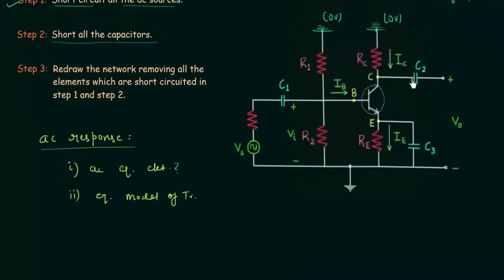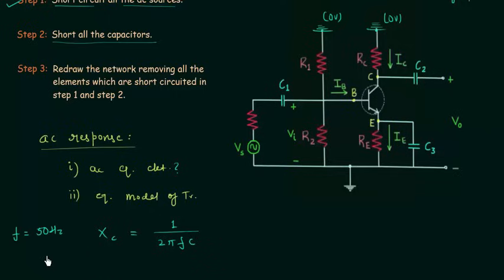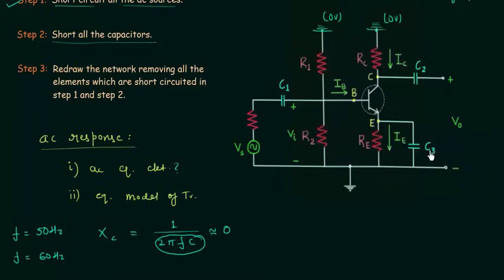The capacitances of the three capacitors are very large and the reactance Xc is equal to 1 divided by 2πfc. In the case of AC signals, the frequency is not equal to zero — it is 50 Hz in India and 60 Hz in America. If the frequency is not zero and capacitance is very large, the denominator becomes very large and Xc is nearly equal to zero. So the reactance offered by C1, C2, and C3 is zero ohms, and we need to replace the capacitors with short circuits.